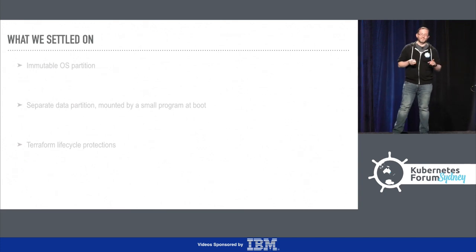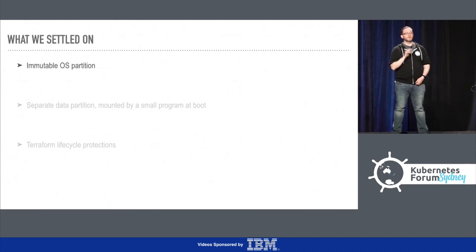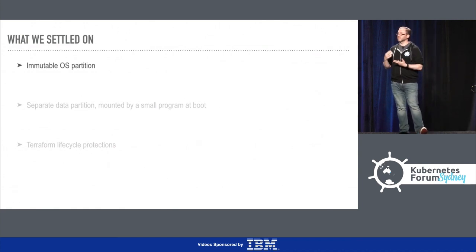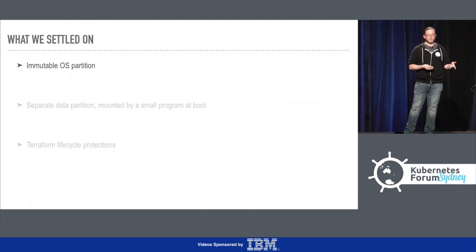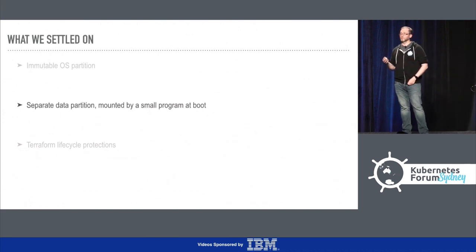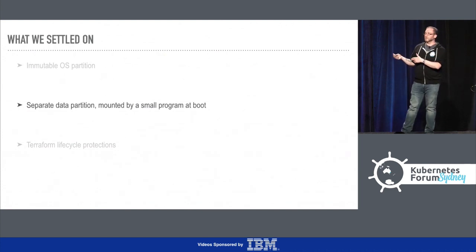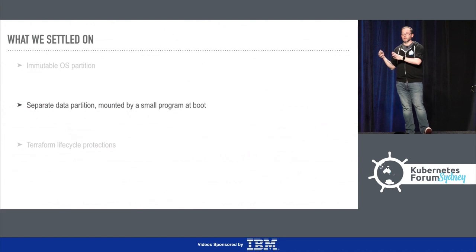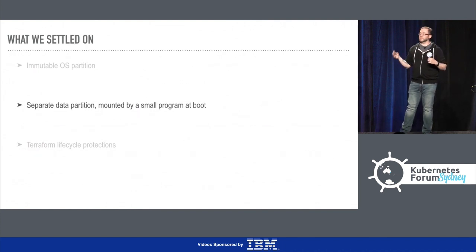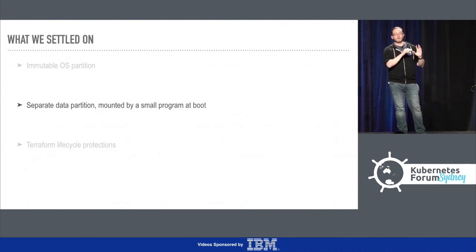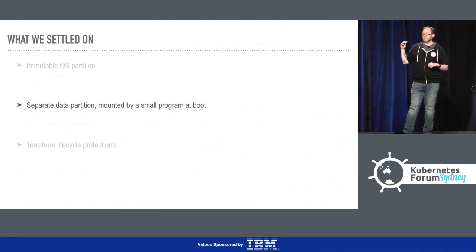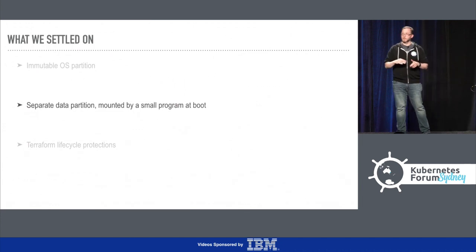Here's later. The first thing was we ended up using an immutable OS partition. So etcd machines are CoreOS machines with this immutable OS partition. By immutable, we don't mean nothing ever changes on it - we mean we don't care what's on it. That's because we have a separate data partition which is mounted by a small program at boot. In AWS, you provision an EC2 instance, you provision a volume as well. There's a volume assigned to each etcd instance, and at boot there's a little Go service that runs, picks the etcd instance it's been told to, and attaches it to the instance.